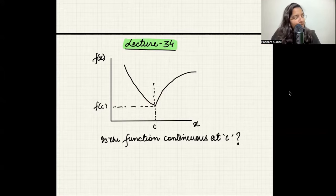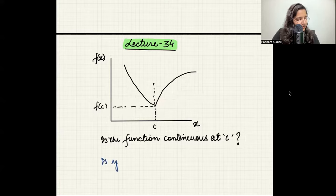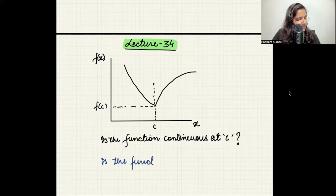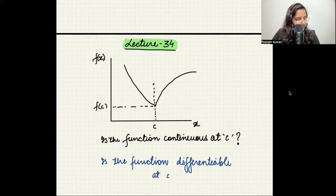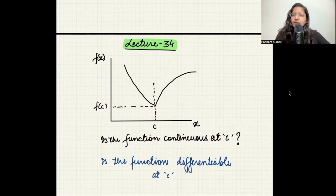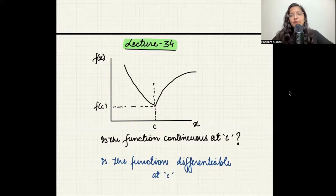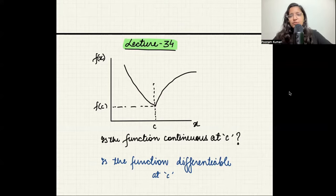My next question is: is the function differentiable at point c? When we differentiate, the derivative at a point gives us the slope of the tangent to the curve at that point. So graphically, to check differentiability, I try to draw a tangent and see what slope it gives — that slope will be my derivative at that point.